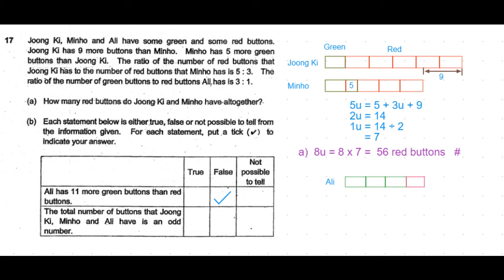If the statement had said Ali has any even number more green buttons, then it would be not possible to tell. But since it states 11 more green buttons, which is an odd number, we definitely know the statement is false.